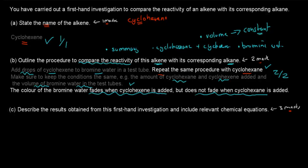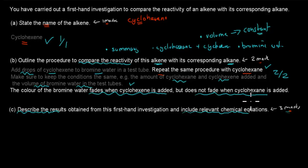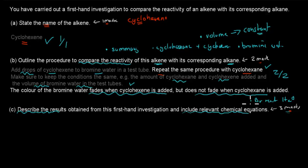For Part C, describe the results obtained from the first investigation and include relevant chemical equations — worth three marks. We need to describe the colour fading, include relevant chemical equations, and explain why the result happened: why did the colour fade? These are all things to include in the answer.